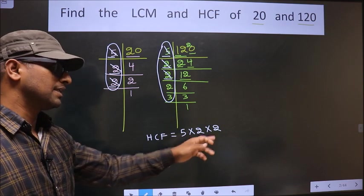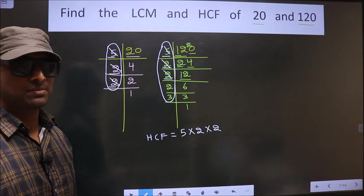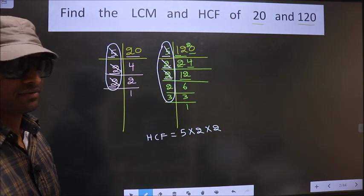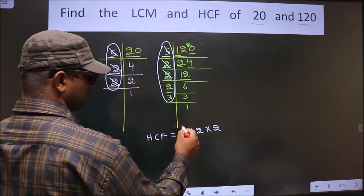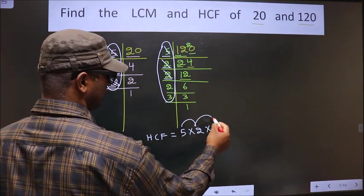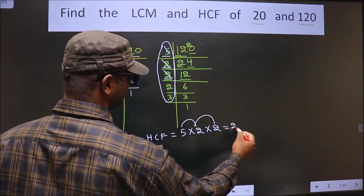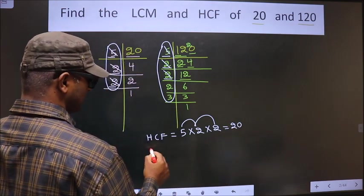Therefore you multiply these numbers. Whatever number you get that is your HCF. That is 5 into 2, 10. 10 into 2, 20. So this is your HCF.